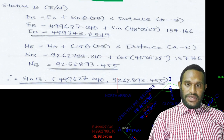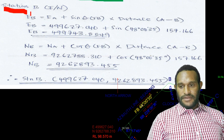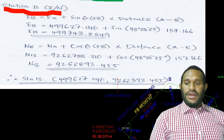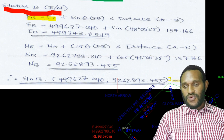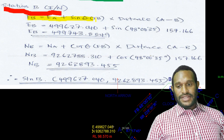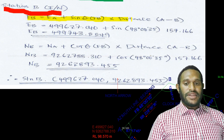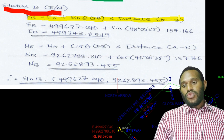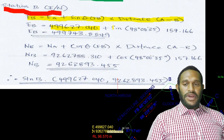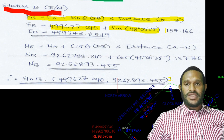Now we will do the first calculation: identifying the coordinate of station B. Eastings of B equals eastings of A, because A is known and B is unknown. So eastings of B equals eastings of A, plus sine theta of the forward bearing (clockwise), multiplied by the distance from A to B. That gives us 499627.040 plus sine(48° 00' 35") multiplied by the distance from point A to point B.